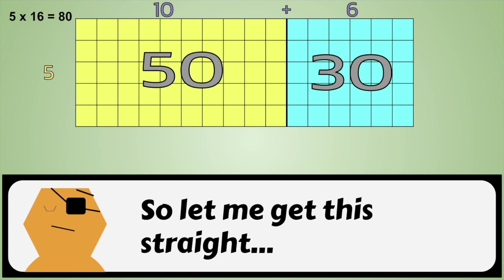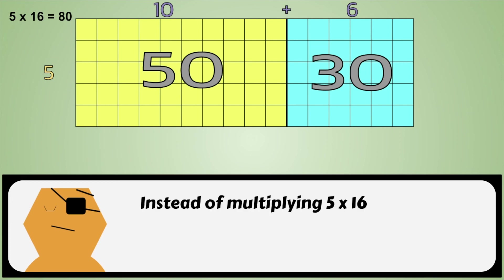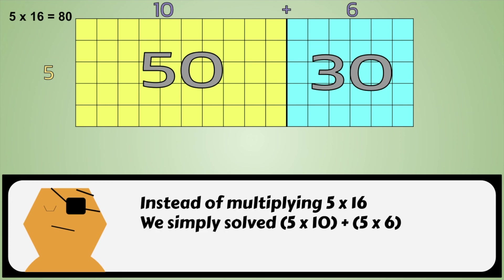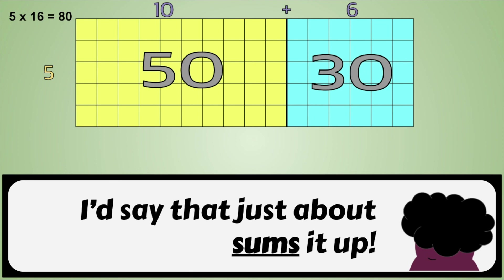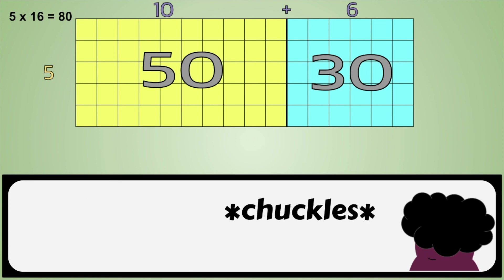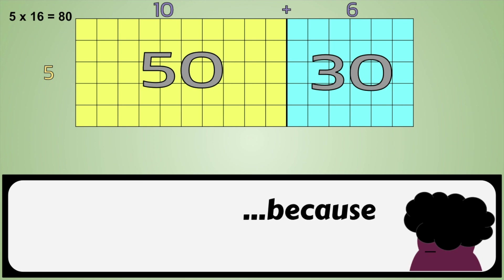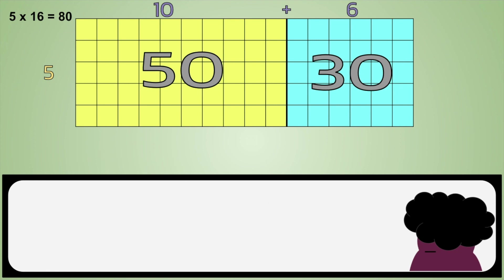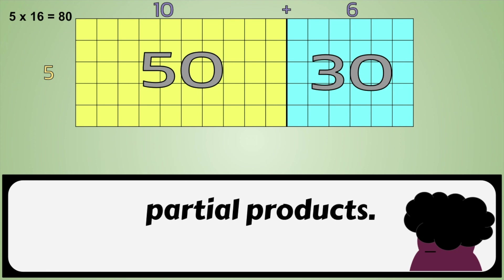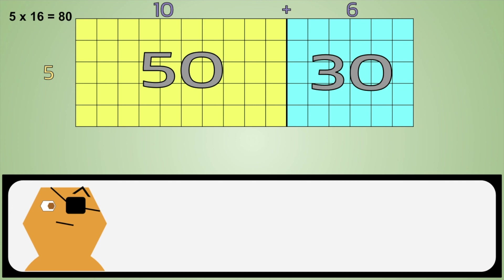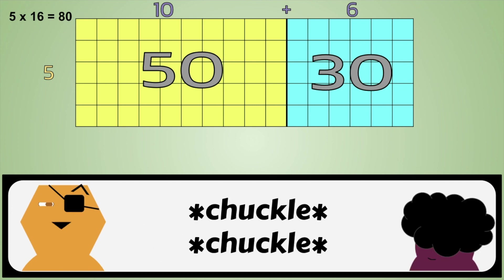So let me get this straight. Instead of multiplying five times sixteen, you simply solve five times ten plus five times six. I'd say that just about sums it up — because we found the sum of the partial products. Just fine, I get it. Ha ha ha!